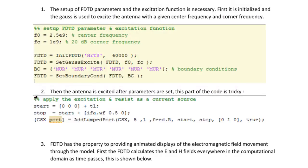Then the antenna is excited as the parameters are set. This part of the code is tricky. The below diagram shows how to apply the excitation. FDTD has a property to providing animated displays of the electromagnetic field movement through the model. First, the FDTD calculates the E and H fields everywhere in the computational domain as time passes.